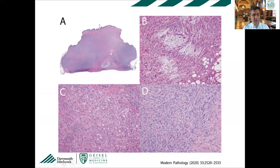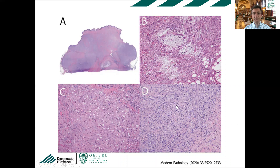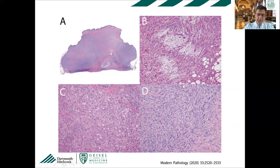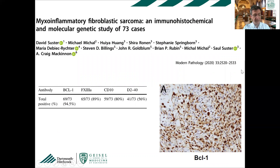The tumor can involve the entire dermis and subcutis, with areas that look more solid and spindle, myxoid areas, and areas where cells look more epithelioid with abundant eosinophilic cytoplasm. There can be transition zones between spindle cells and epithelioid cells. This is another tumor that can show epithelioid features. Immunohistochemical stains are not very useful — it's really a morphologic diagnosis — but there are some recent data on this.